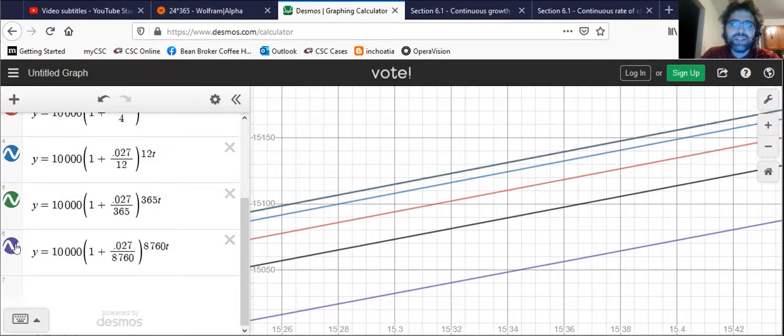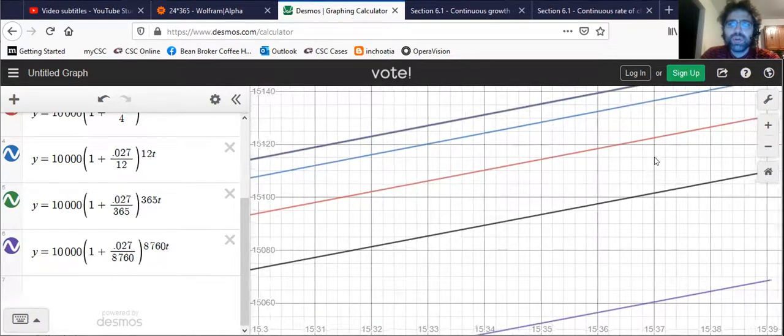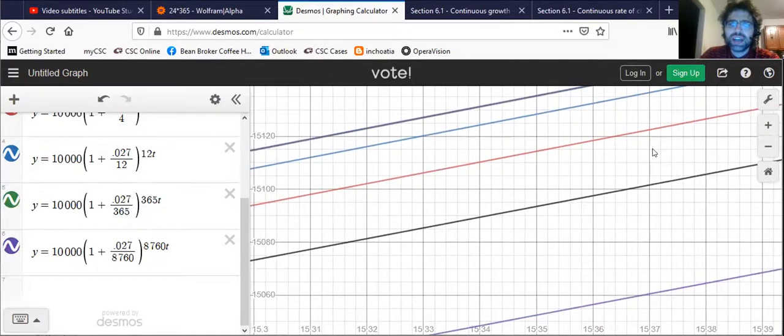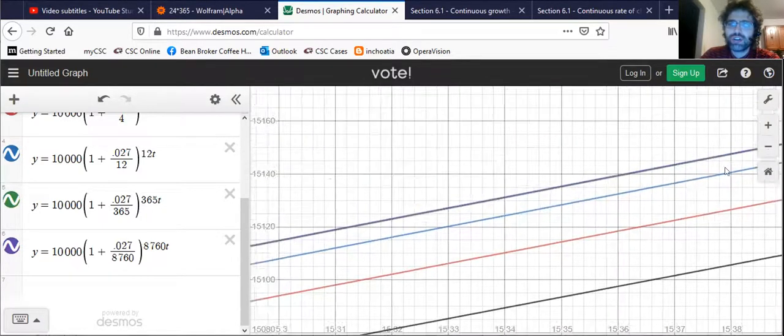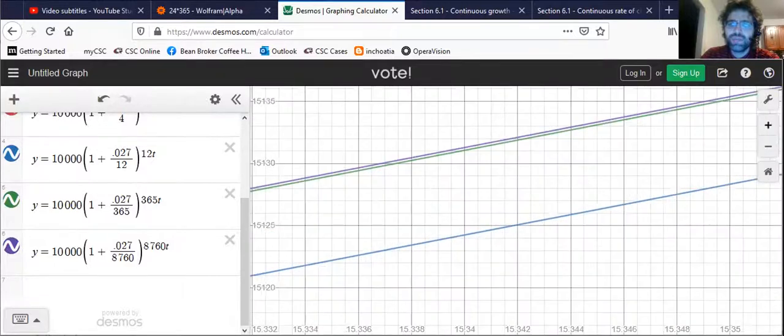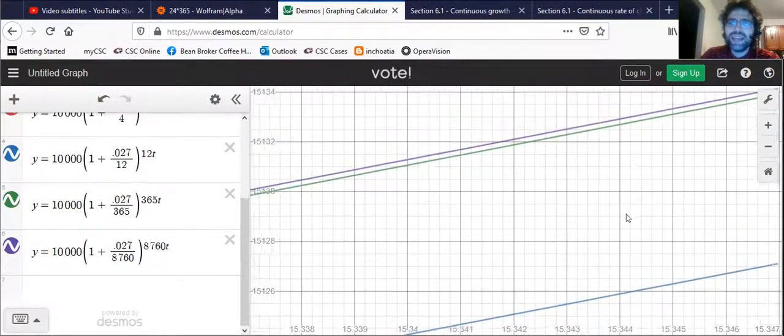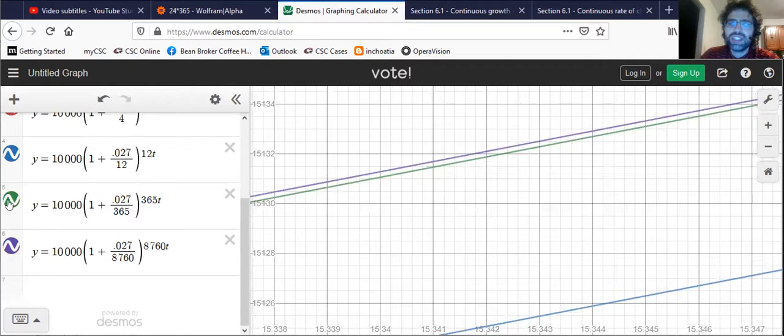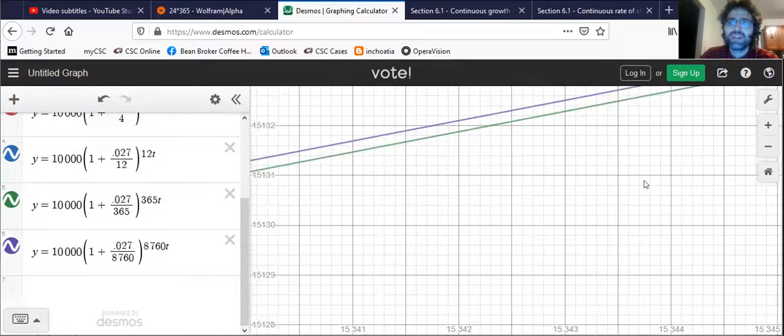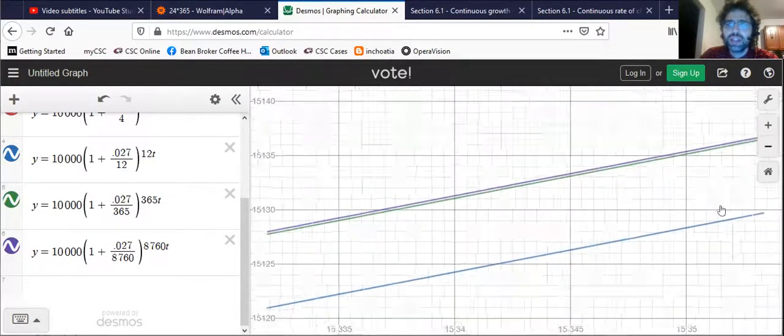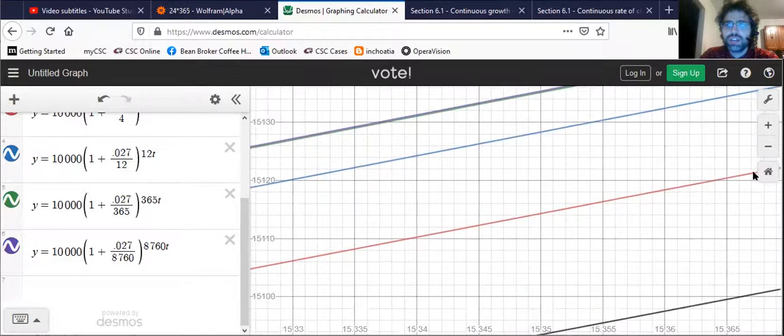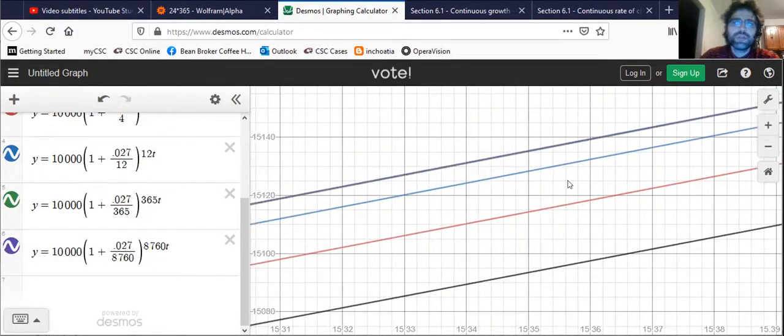You can't even see a difference between them. So we're really seeing very diminishing returns here. If we zoom way in, we can see that the hourly and the daily graphs are different. But at the viewing window we started with, they're indistinguishable.